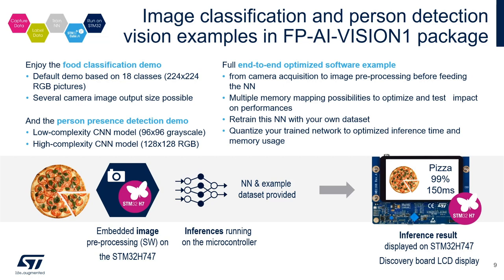The application examples provided in the function pack are food recognition, which can recognize among 18 classes of common food, and person presence detection, which is able to identify whether a person is present in the image or not. In this video series, we will focus on the food recognition example. The function pack demonstrates the integration of two types of neural network model: 32-bit floating-point model and 8-bit quantized model. It also demonstrates model integration in different memory configurations. This function pack is designed as a project to help you kick-start and test your own computer vision applications.